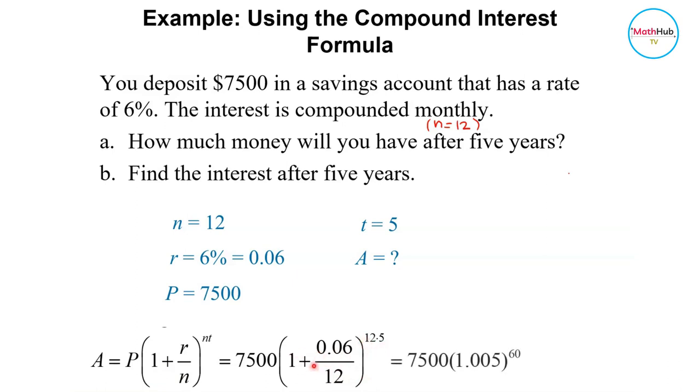And then simplifying this, you have 7,500 times 1.005 raised to 60. Then you multiply that one, you get 10,116.38. So that is the amount of money in the account after 5 years at 6% compounded monthly.